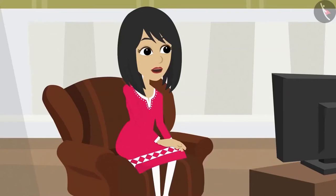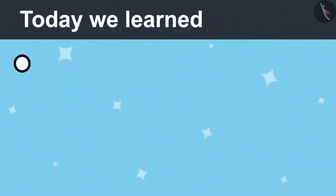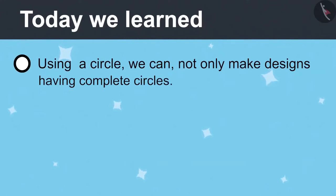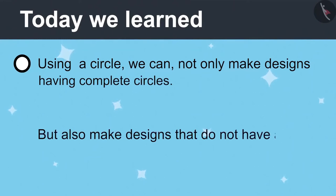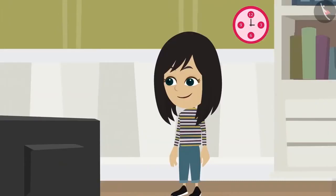You have become very intelligent. Thank you. But you see that no full circle is visible in this shape. Yet it is a shape made from a circle. This means using a circle, we cannot only make designs having complete circles like rangoli, but also make designs that do not have a full circle, such as the moon. Tomorrow, Vandana and I will together try to find designs made with many circles.